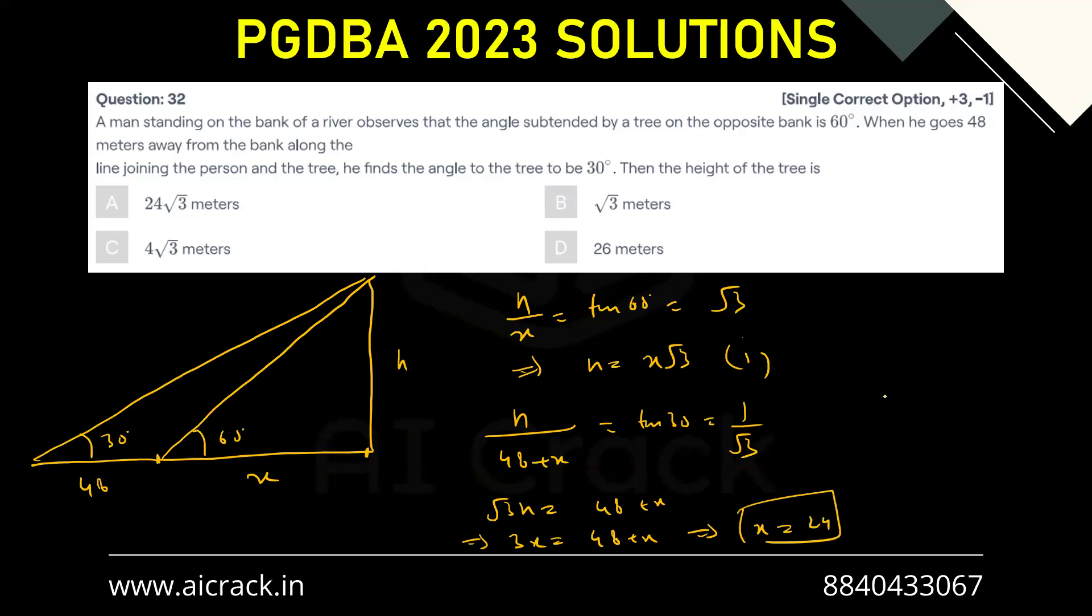Now if x equals to 24, h equals to 24 root 3. This is the height. A is the correct answer.